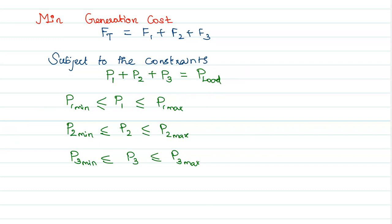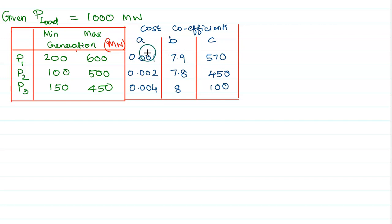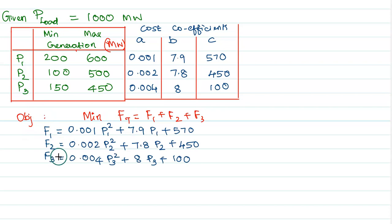Let us provide some numerical values to this problem and reformulate it. Given: P-load equals 1000 megawatt, and the minimum and maximum generation of each power generating unit is given in megawatt. The cost coefficients A, B, C for each generating unit are also given. With this information, we formulate the optimization problem: minimize the total cost of generation, which equals the summation of individual costs based on these A, B, C coefficients.